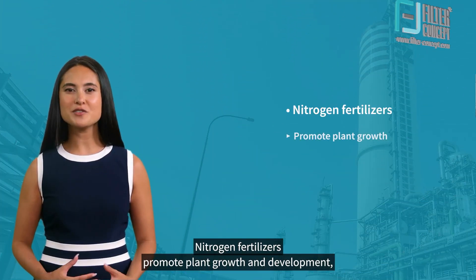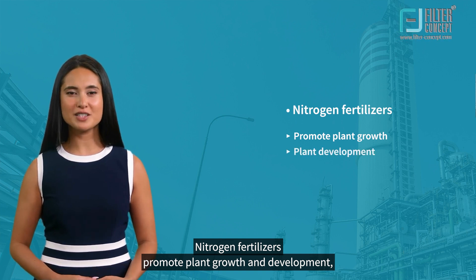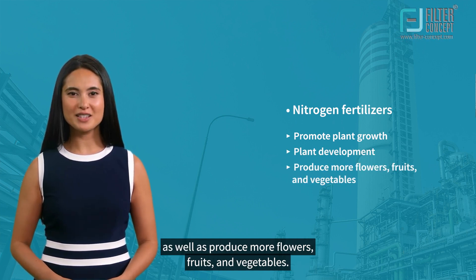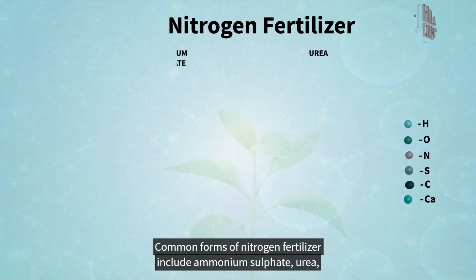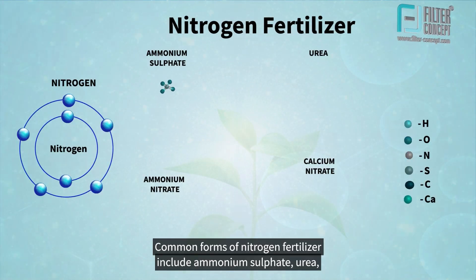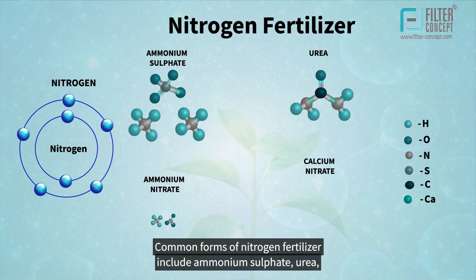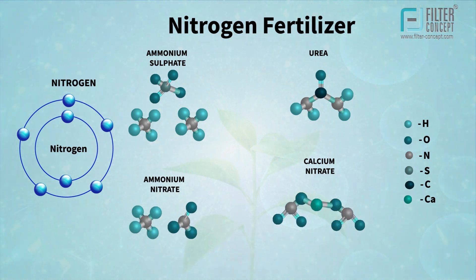Nitrogen fertilizers promote plant growth and development, as well as produce more flowers, fruits, and vegetables. Common forms of nitrogen fertilizer include ammonium sulfate, urea, ammonium nitrate, and calcium nitrate.